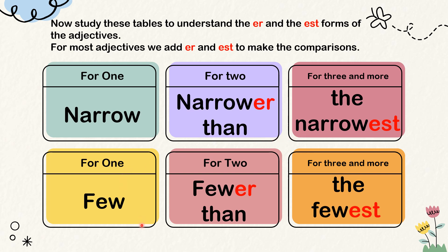Let's make another sentence with the following words: few, fewer than, the fewest. He has few coins. His sister has fewer coins than him. He has the fewest coins.